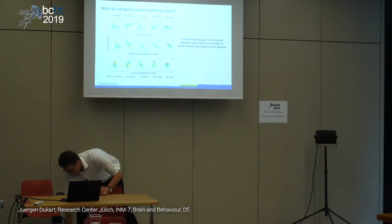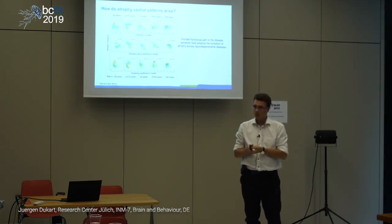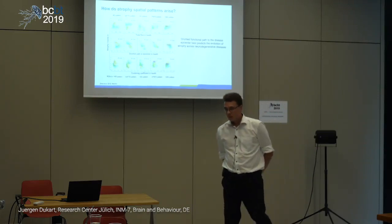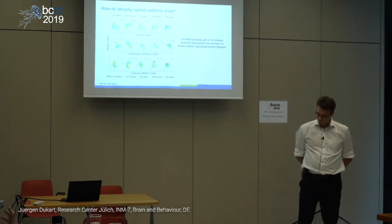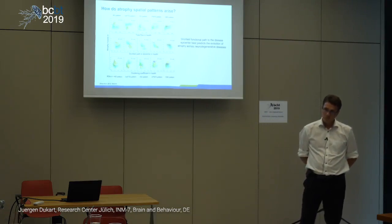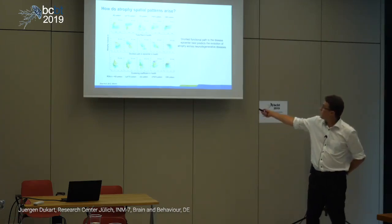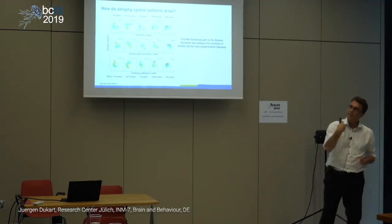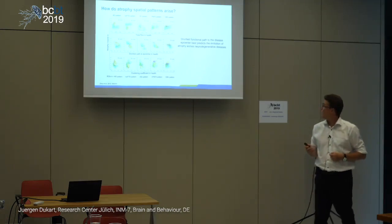Question from audience: could this just reflect desynchronization in activity rather than structural absence? Response: keep in mind that these healthy control correlations are from people not yet affected by the disease. We take people who are not yet affected, get the correlations from those people, and then link it to something which may occur 20 to 30 years later. And still we get those nice correlations.